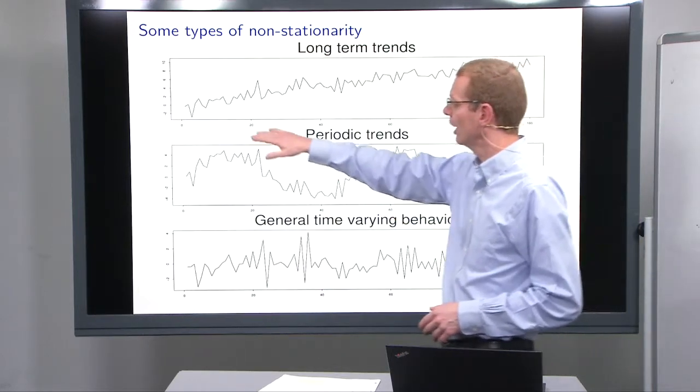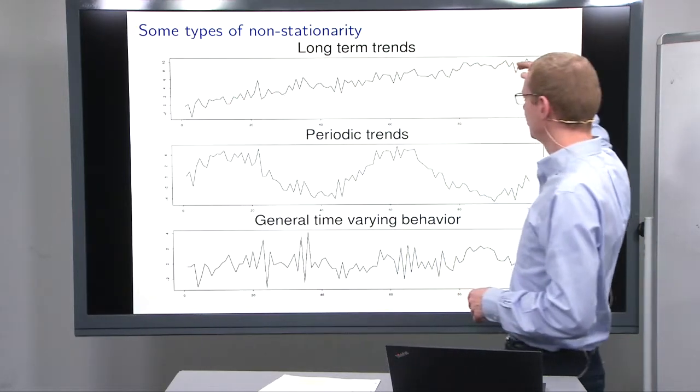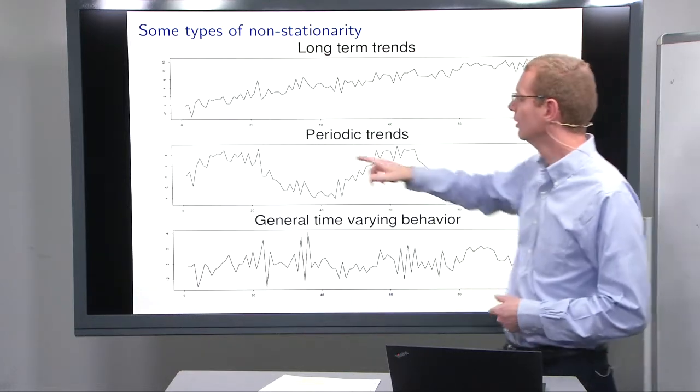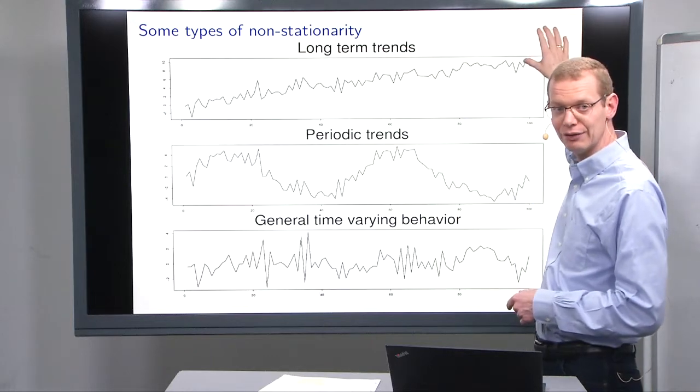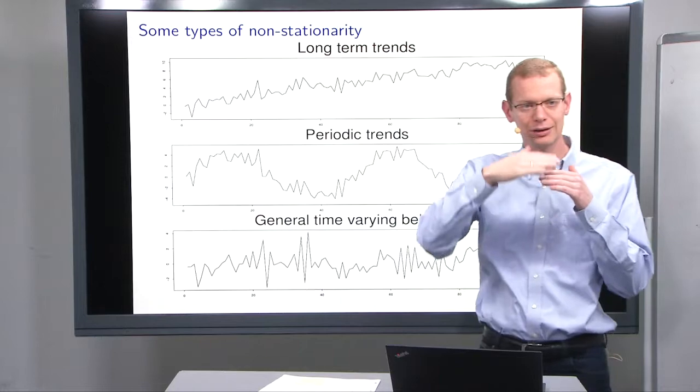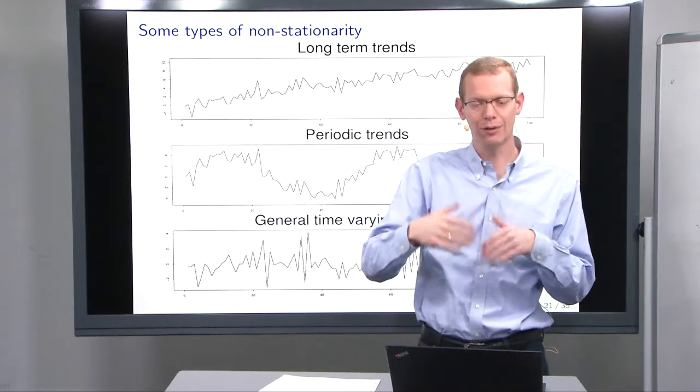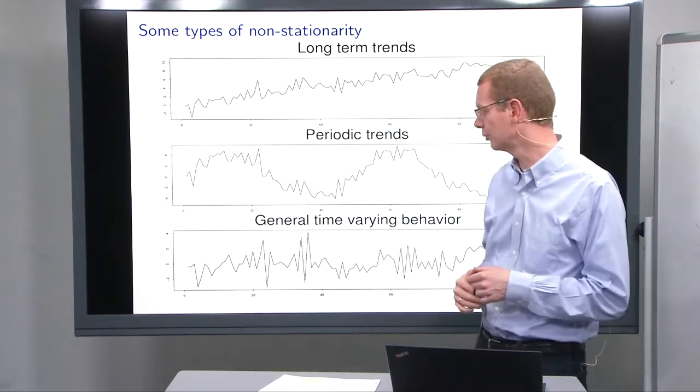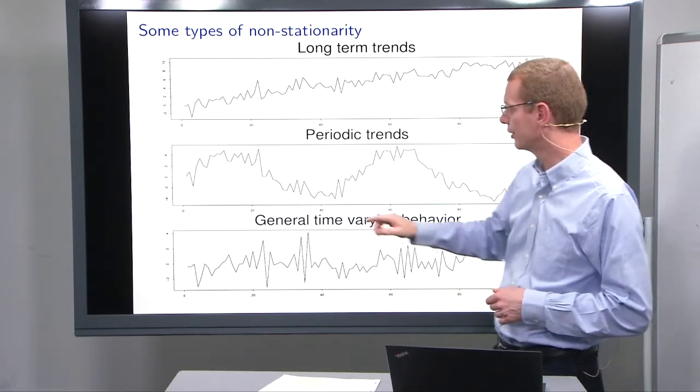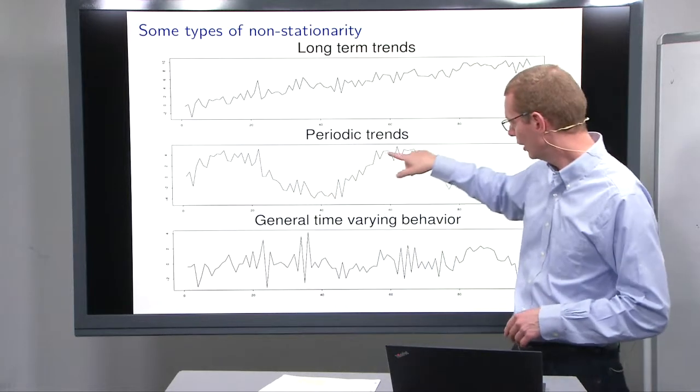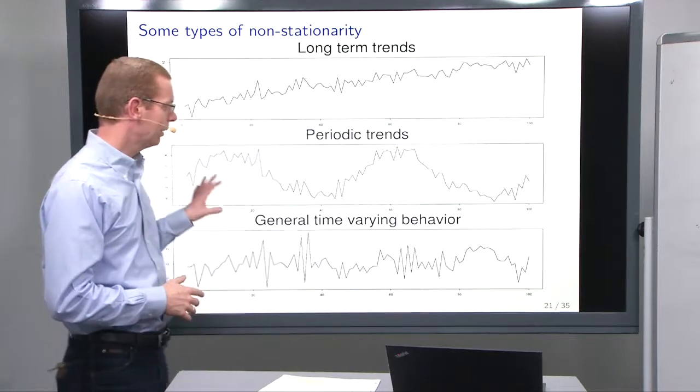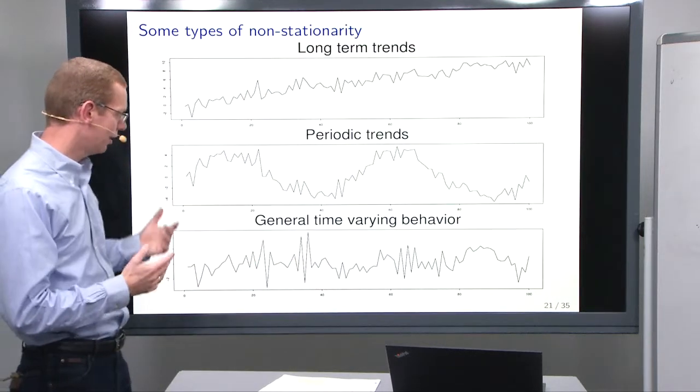One typical thing is to have a long-term trend, which you can model in at least two ways. You can say, maybe there's a deterministic trend underneath everything, or maybe it's just a process that goes a little bit up all the time on average, but it could do other things as well. The next option is to have a periodic trend. So you have some stochastic variation around some periodic signal. It may be nice as this, or not as nice.